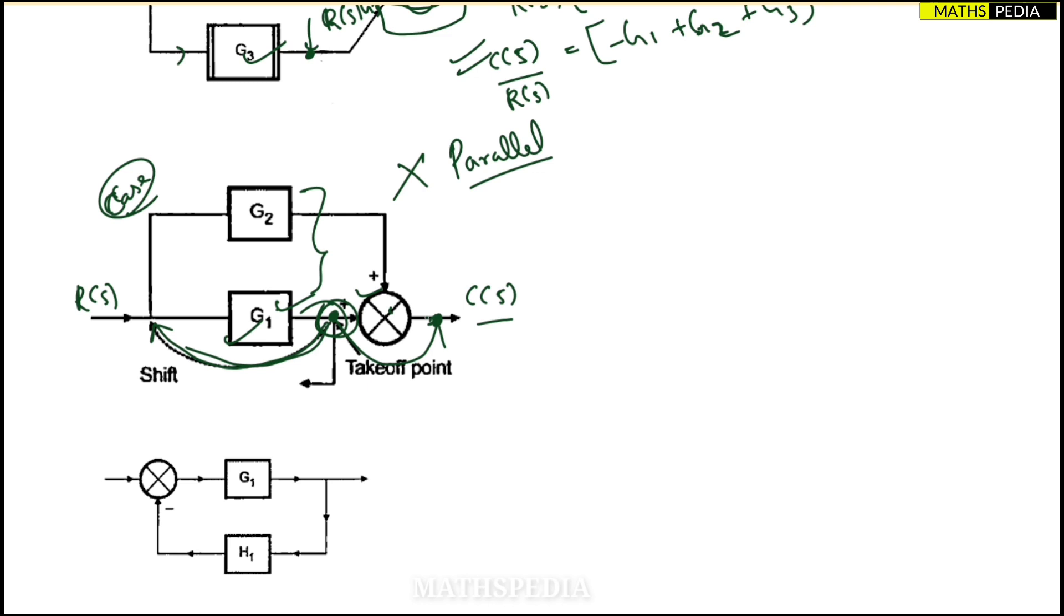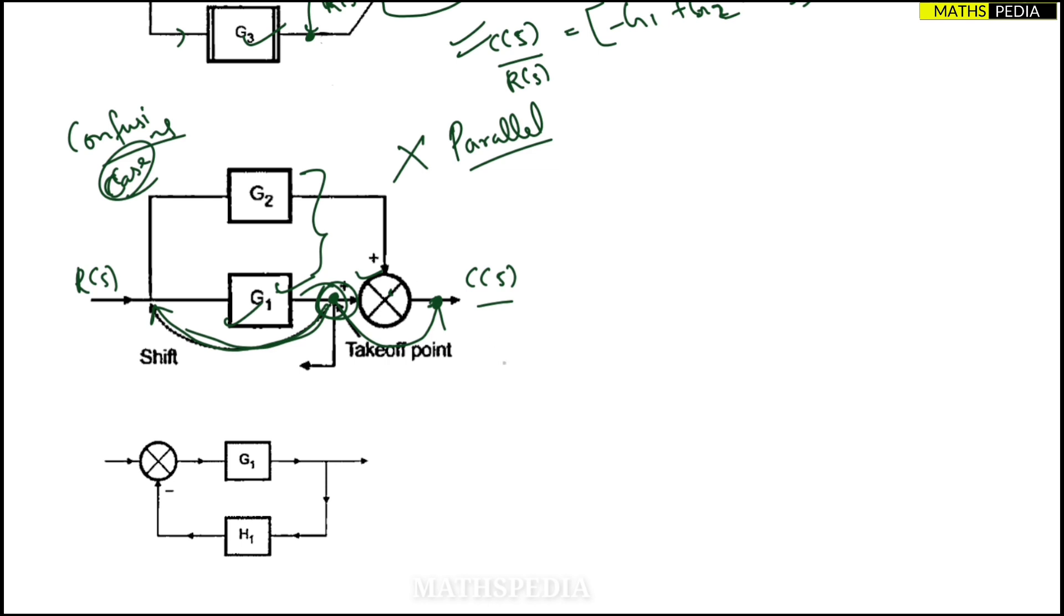Because these are kind of confusing cases. Confusing cases means you will get confused whether it is in parallel or series or whatever. You should be very, very careful. Now the problem here is that you cannot simply shift this takeoff point before this block and after the summing point and all. There are some kind of rules for that also that will be discussed in the upcoming videos.